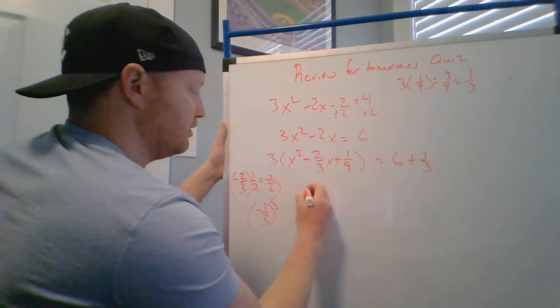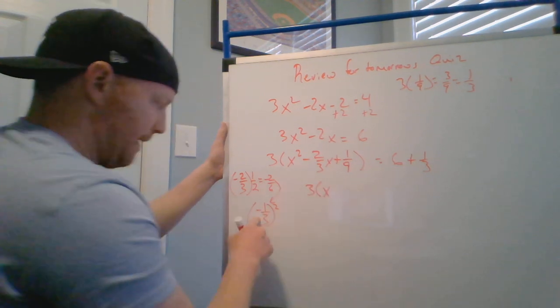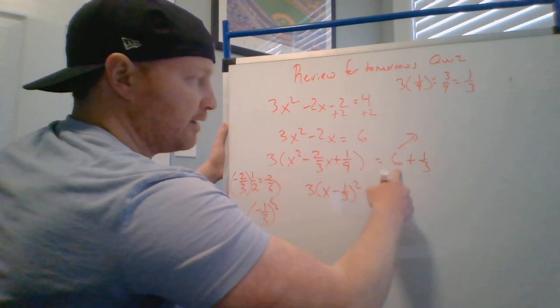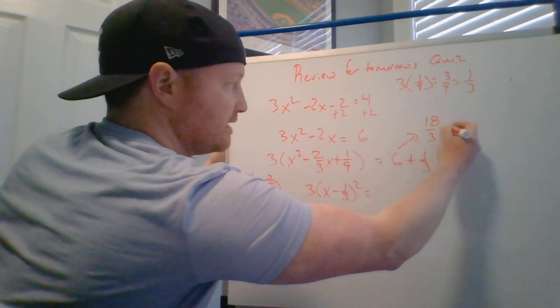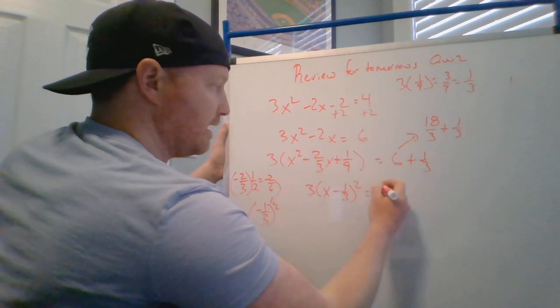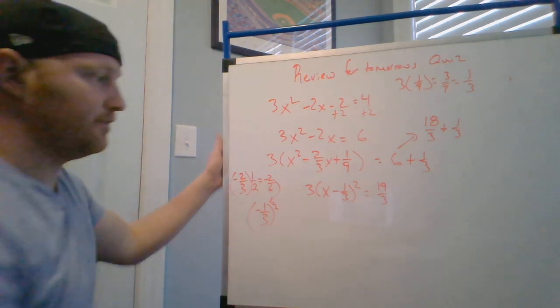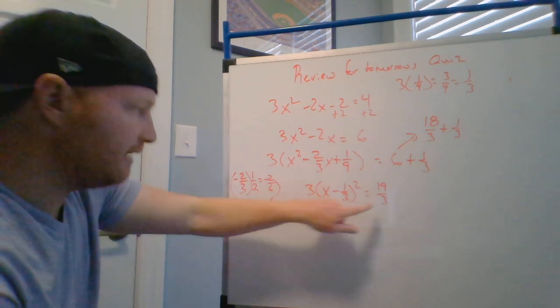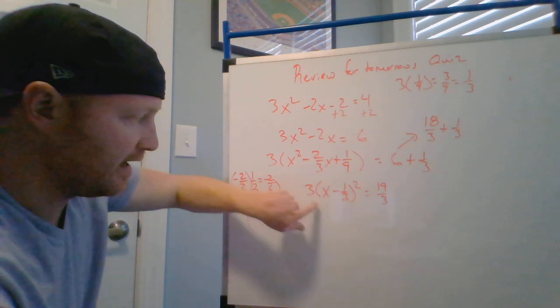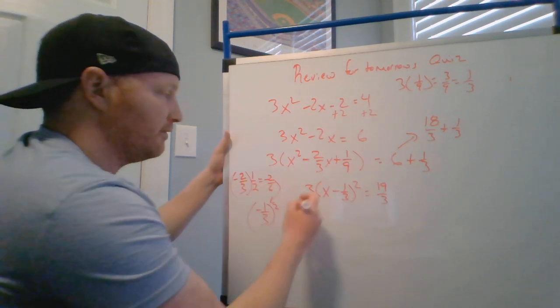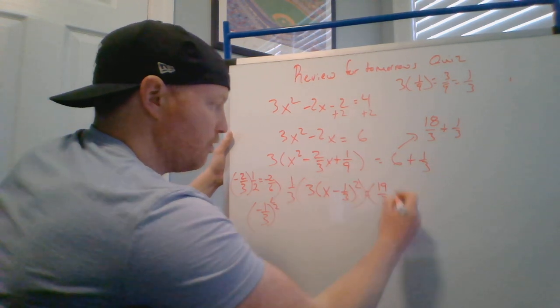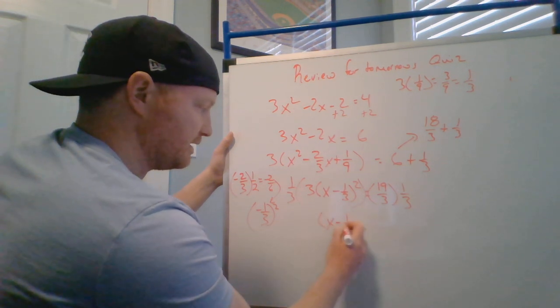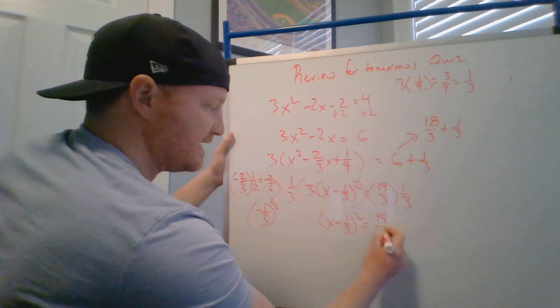Now this reduces to 3 times parentheses x minus 1/3. That's where this comes in. Squared equals 6. I have to have a common denominator, is the same as 18/3 plus 1/3. This is the same as 19/3. Now again, try to do this without using a calculator. This is why these tricks come in handy. I can divide both sides by 3, but I'm really bad at dividing fractions by fractions. So dividing by 3 is the same as multiplying both sides by 1/3. It means the exact same thing.